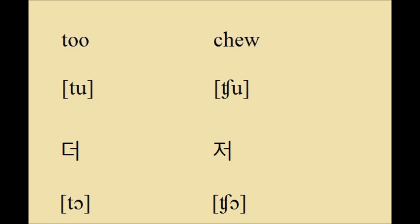An affricate involves air flow that is completely stopped but then is released slowly. Compare the plosive T with the affricate CH. Both English and Korean have affricates. Compare the English words 'to' and 'chu', as well as the Korean words 'to' and 'cho'.